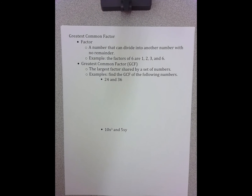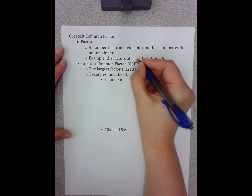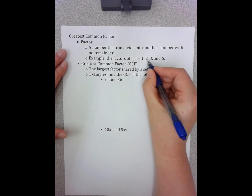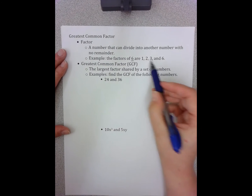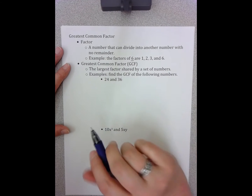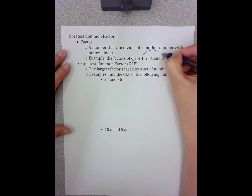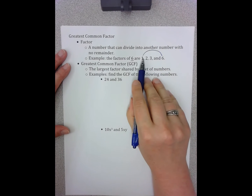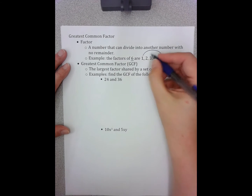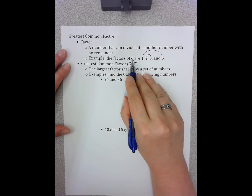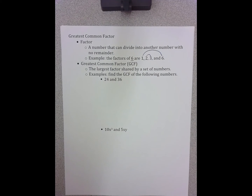These are notes on the greatest common factor. A factor is the numbers that can divide into another number with no remainder. So for example, the factors of six are one, two, three, and six. I tend to write them from smallest to biggest, and what that actually means is I can do this lovely little rainbow thing here where one times six is six, and two times three is six.